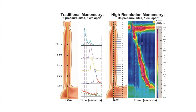The traditional manometry had 3–8 sensors placed 5 centimeters apart — not adequate coverage. The HRM has 36 sensors at one centimeter apart. The image to the right is the HRM Clouse plot — also called EPT, Esophageal Pressure Topography. To read a Clouse plot, three key terms are necessary: the x-axis is time in seconds, the y-axis is centimeters from the upper esophageal sphincter, and the colors represent pressure levels.